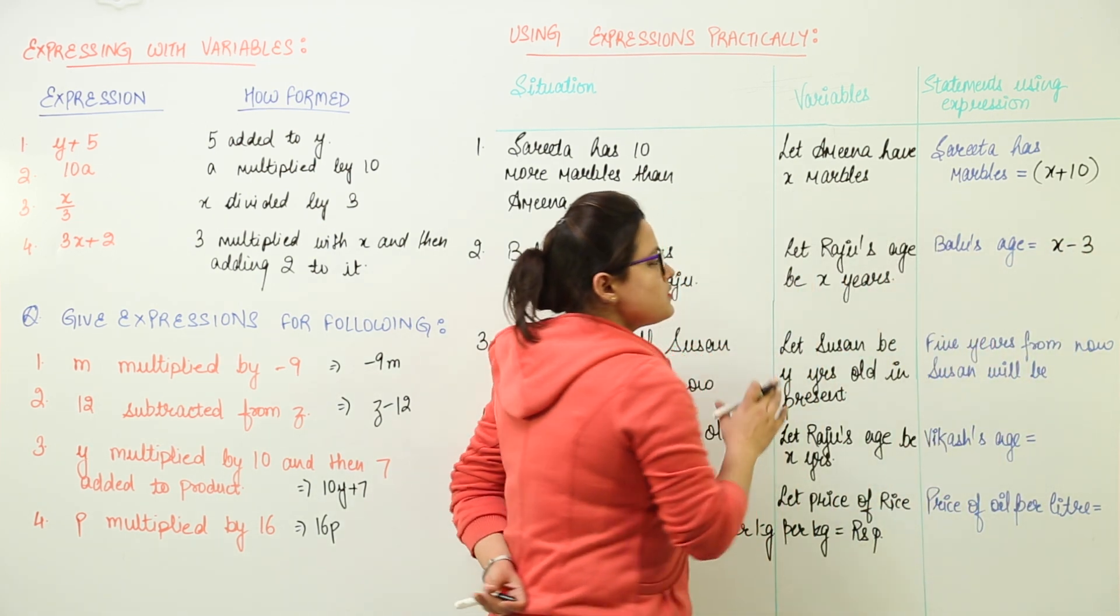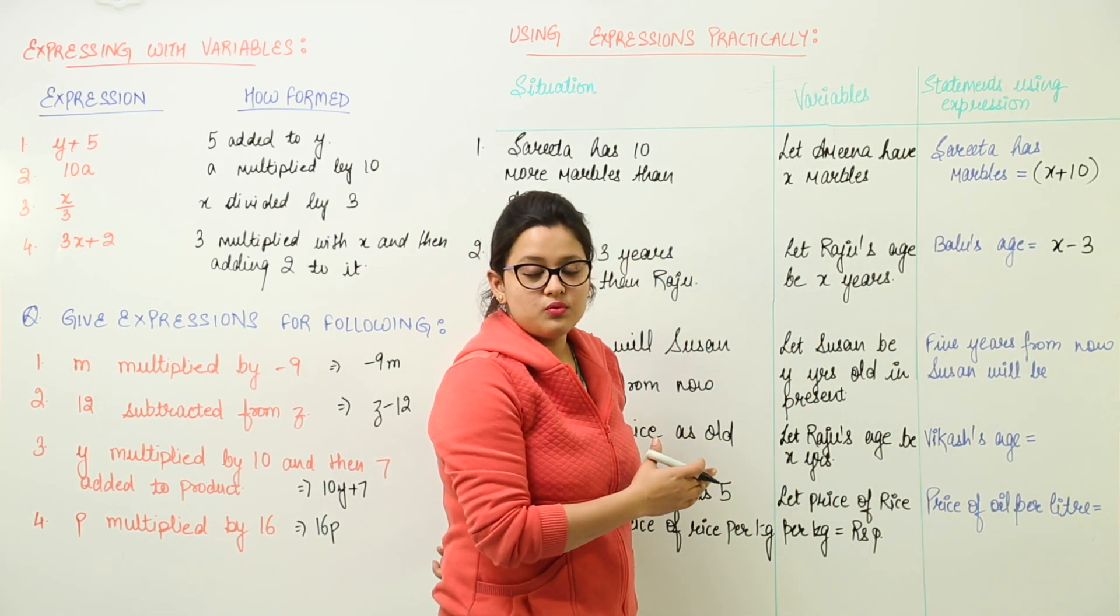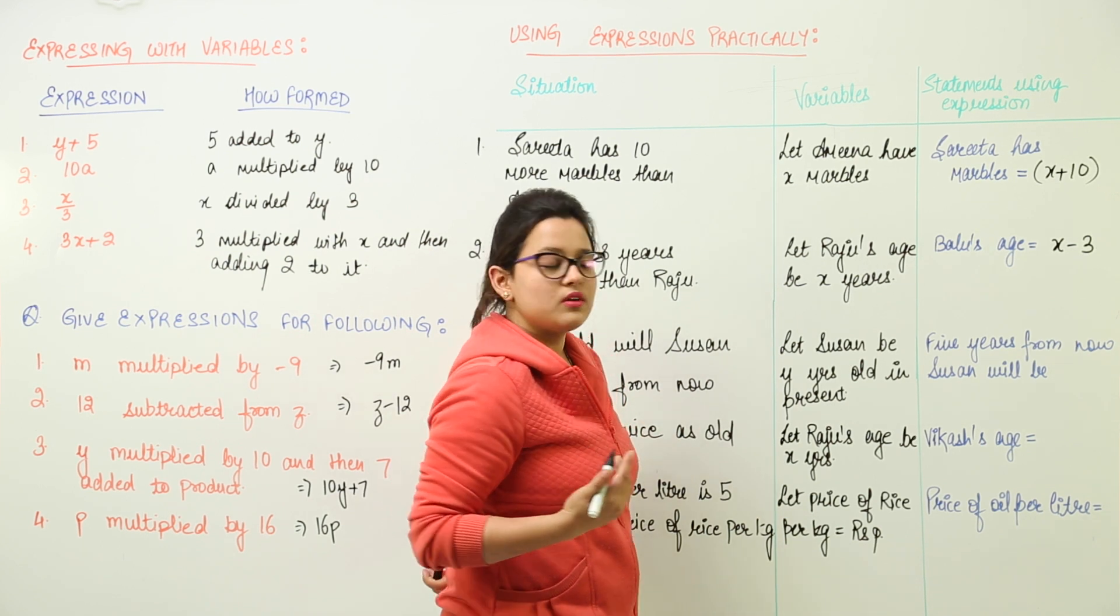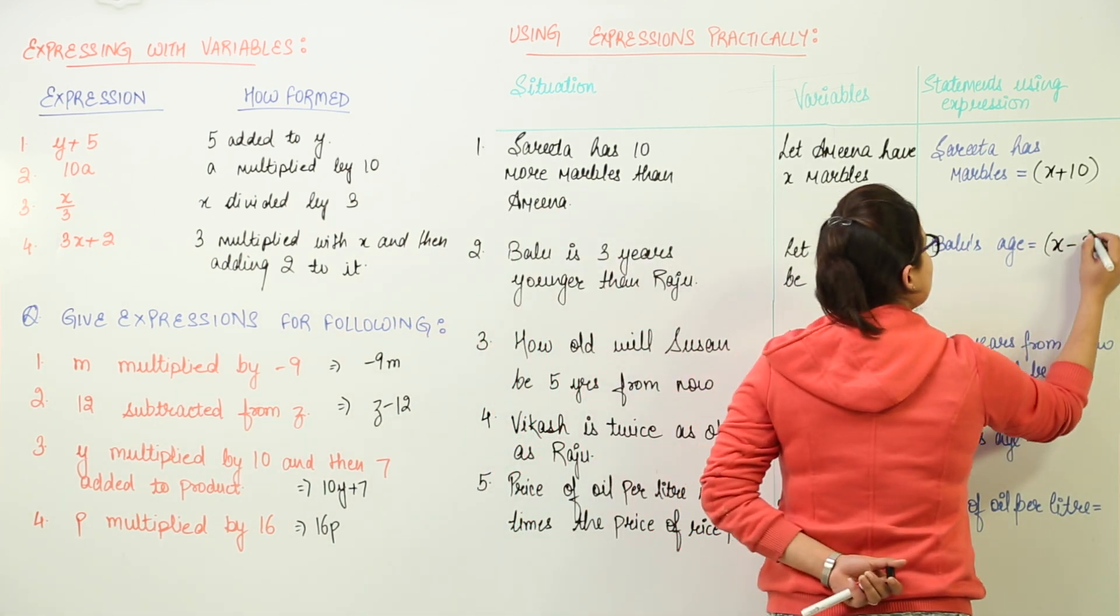if Raju's age is x as we have assumed, 3 years younger would mean minus 3. Right? And that would give Balu's age.